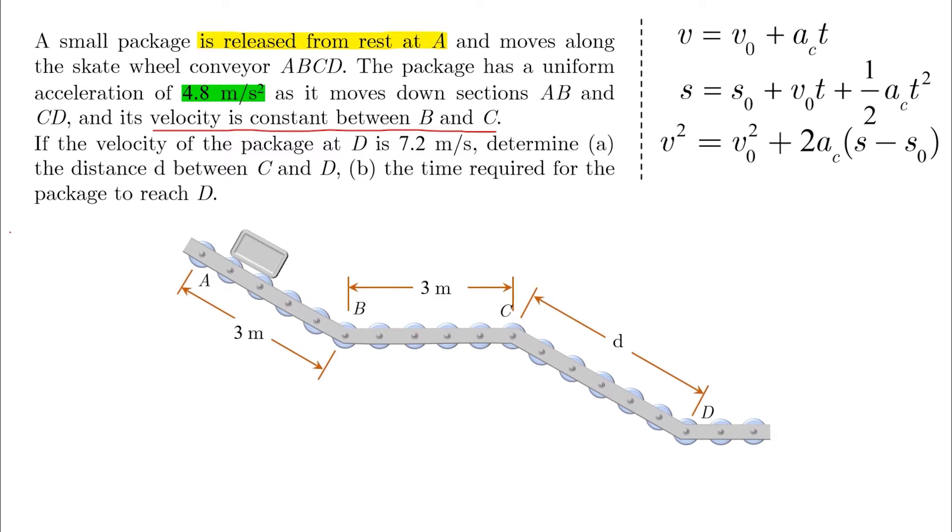So basically we can use those three equations in all three sections. AB and CD has a constant acceleration of 4.8 meters per second square, and section BC has a zero acceleration because the velocity is constant.